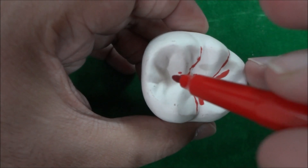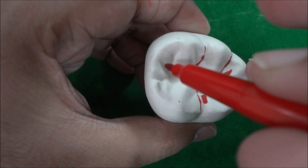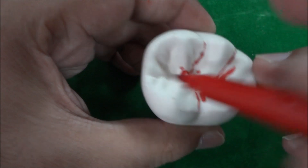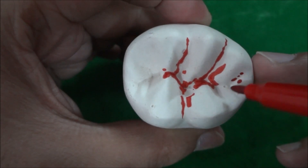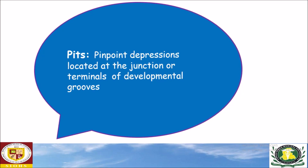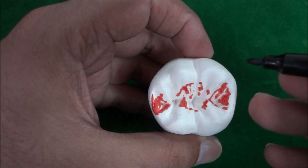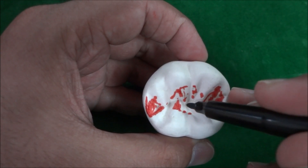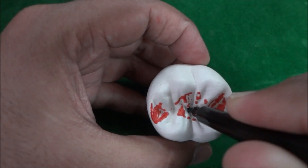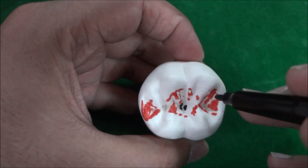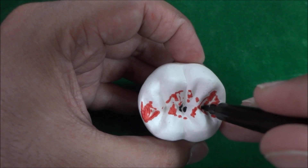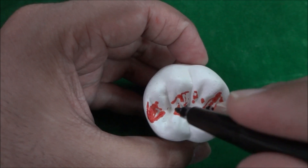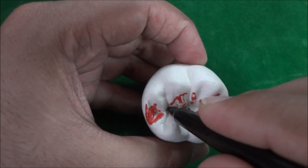There are a few additional grooves known as supplemental grooves — you can see these smaller grooves on the surface. Pits are the pinpoint depressions located at the junctions or terminals of the developmental grooves. In the center you can see a pit, sometimes referred to as the central pit. This is a mesial pit, and this pit is known as the distal pit.